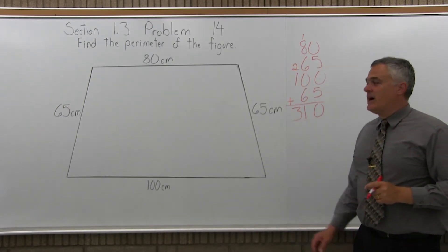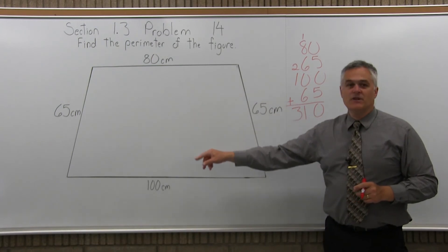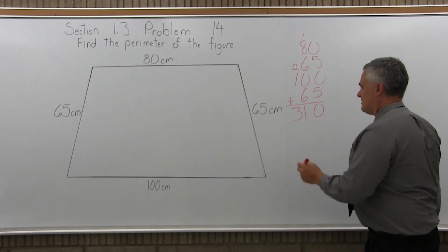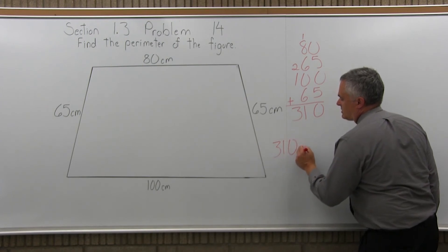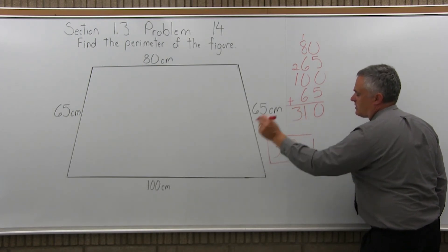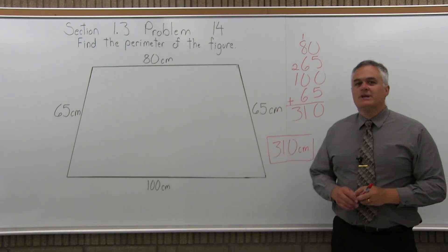So, I have 310. Now, because units of measure are given, they're all in centimeters, our answer is in centimeters, so to do a nice job I should keep that units of measure. So, the answer is the perimeter of this figure, in other words the distance around all the edges, would be 310 centimeters.